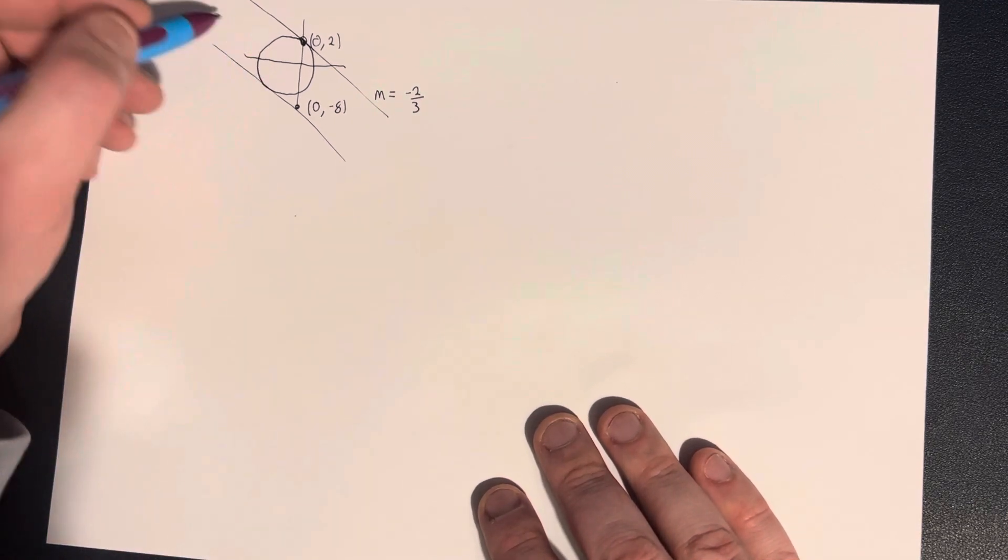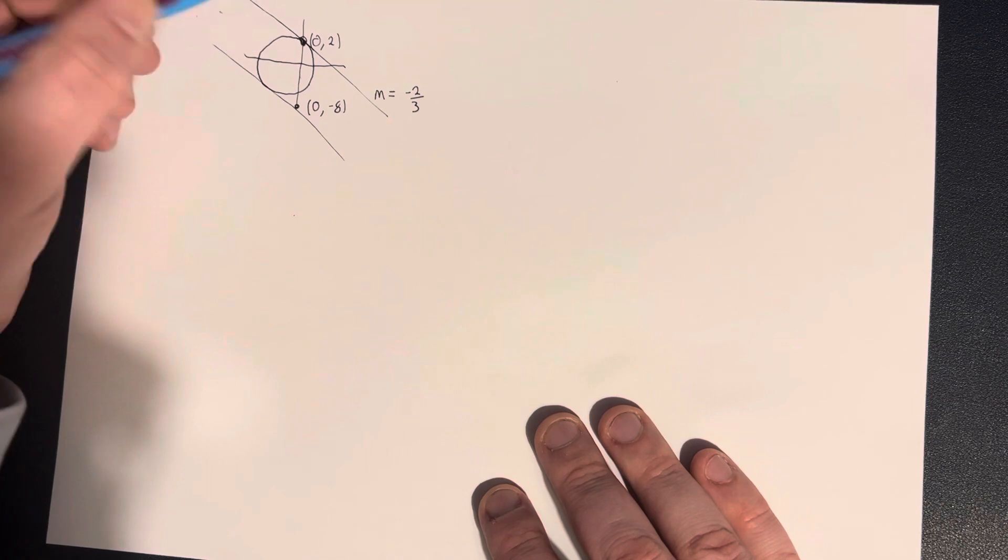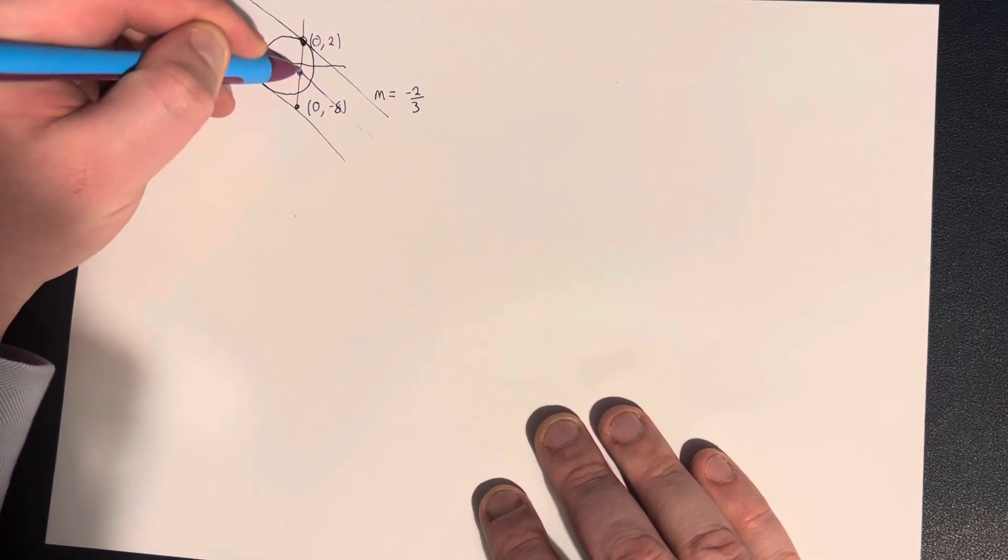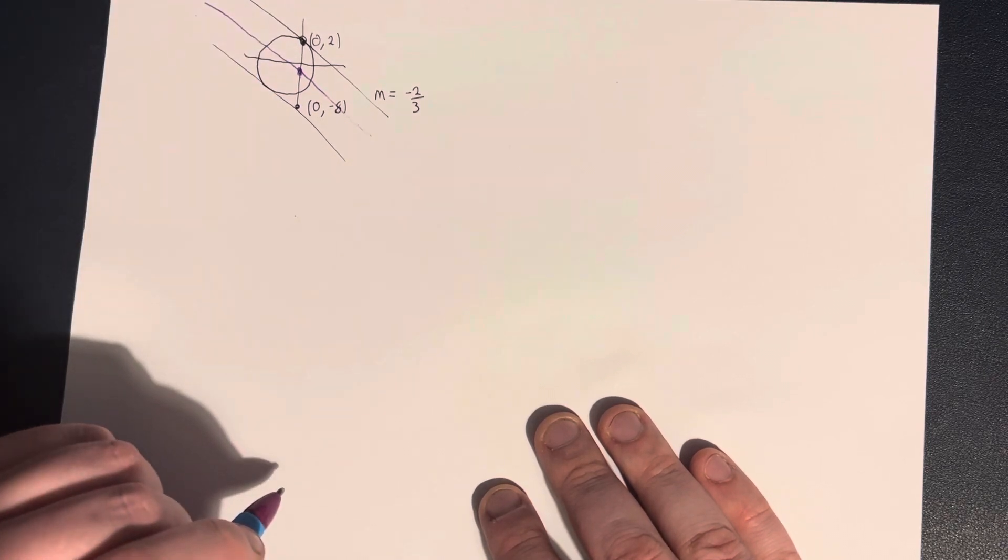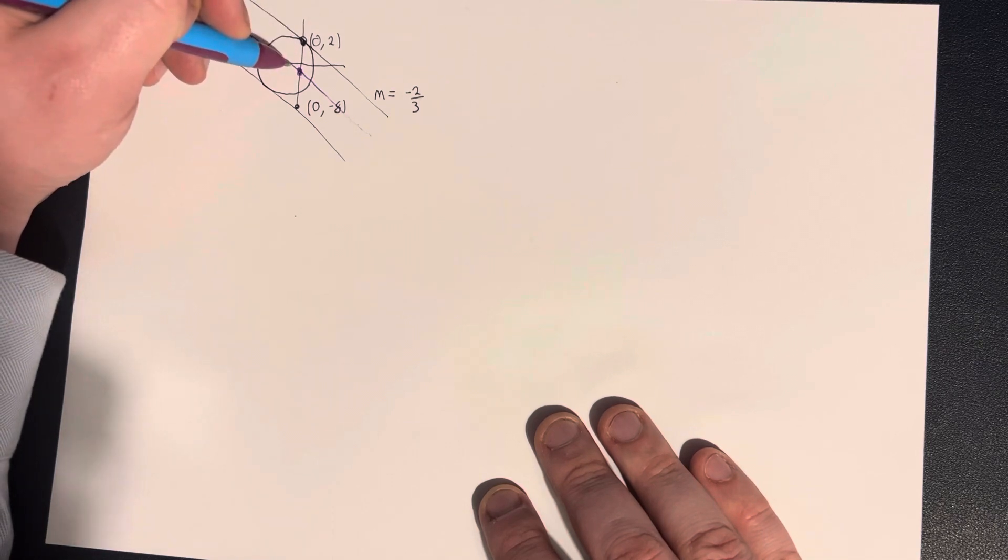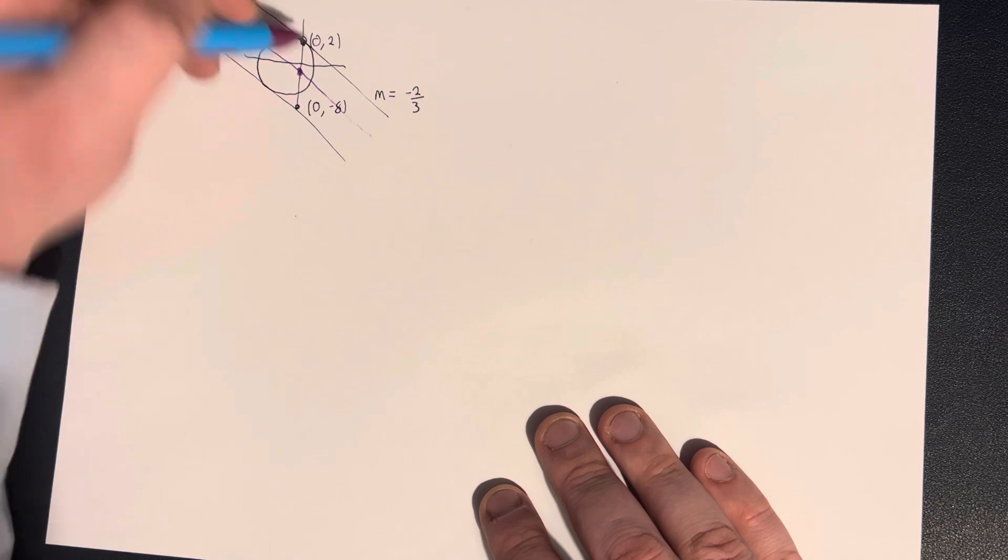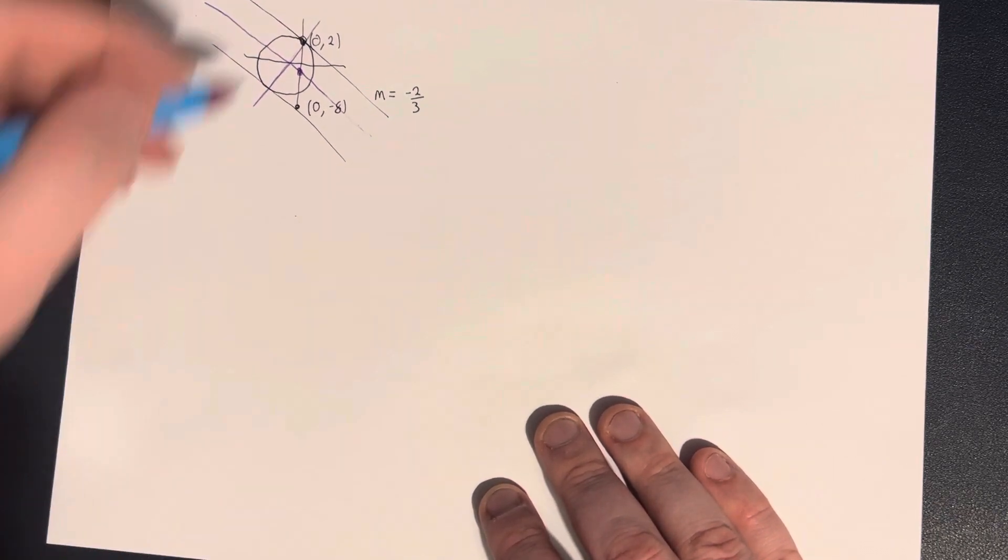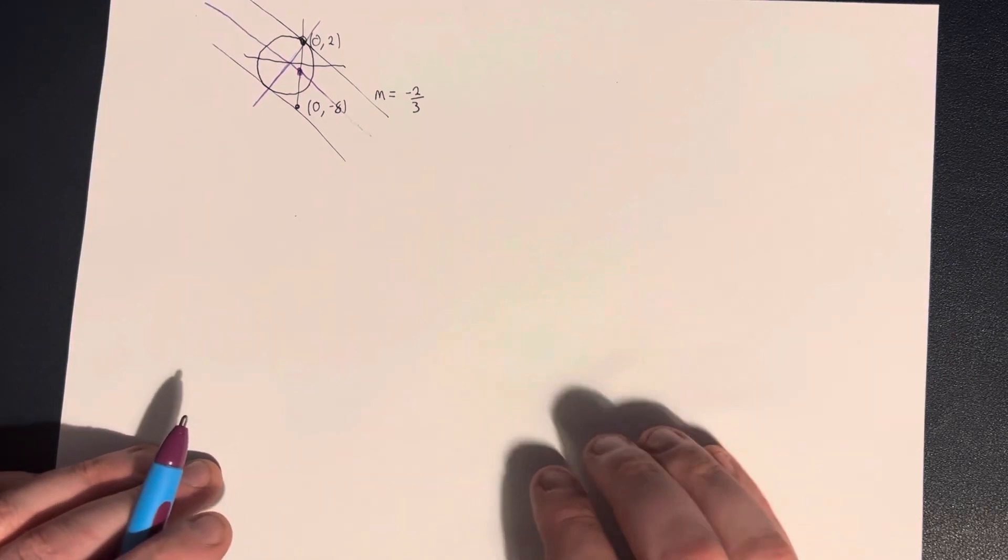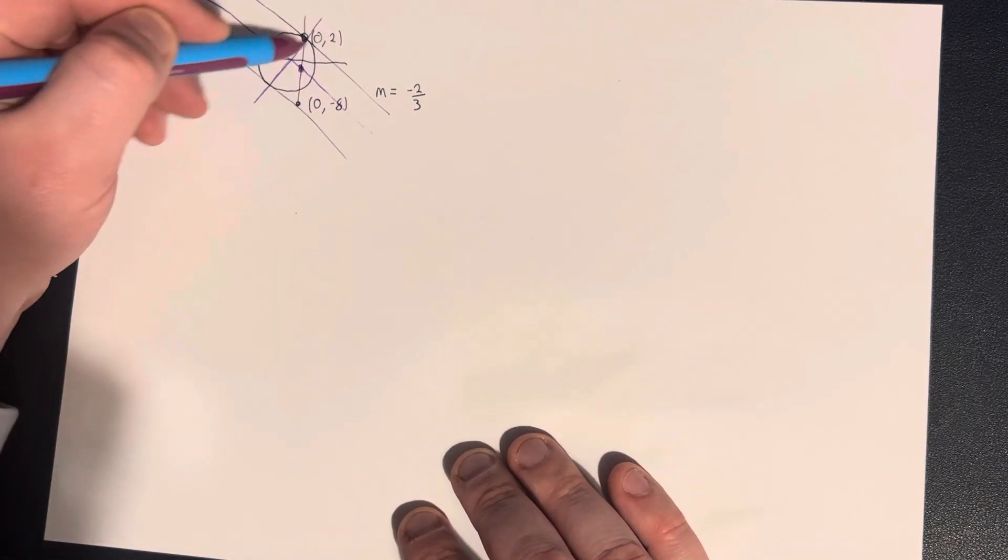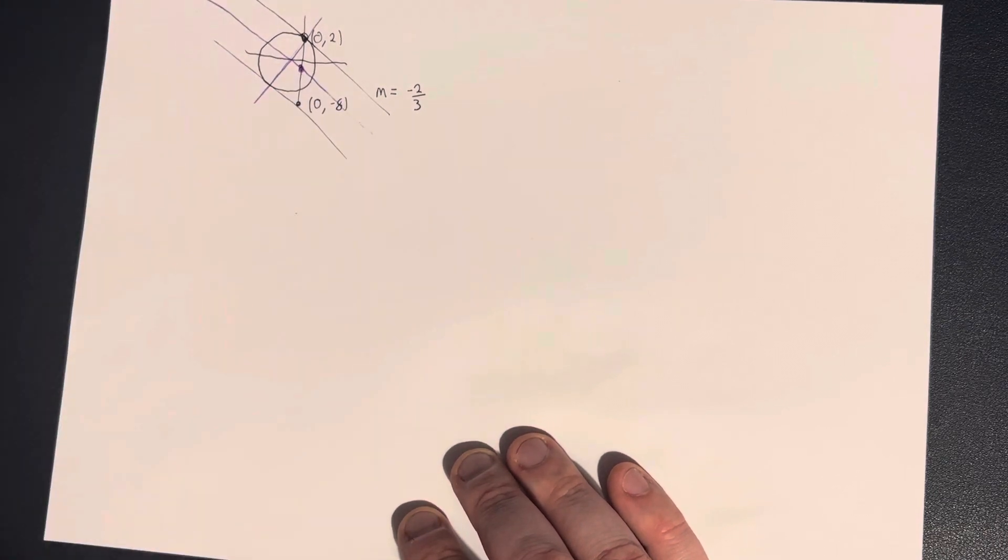So in order to get the center, we constructed a line that went this way through the center. We realized that would also go halfway through the midpoint of these two points here. We could find where exactly on this line the center is by constructing another line going this way. Where those two lines intersect, that will be the center of our circle. This line here is parallel to this line, and this line here is perpendicular to this line.